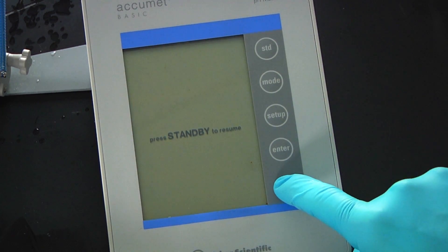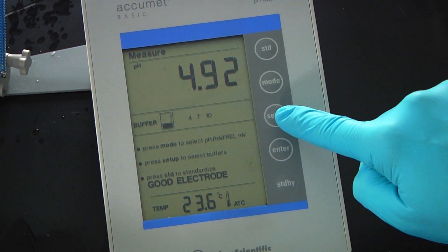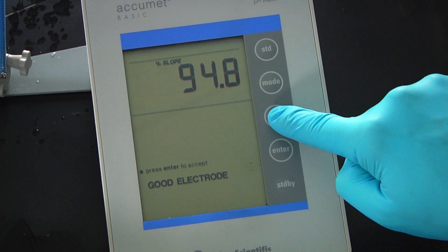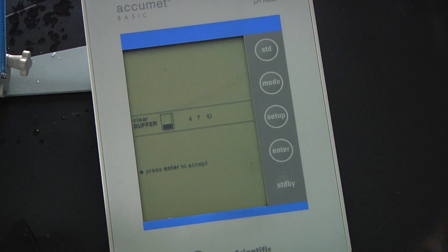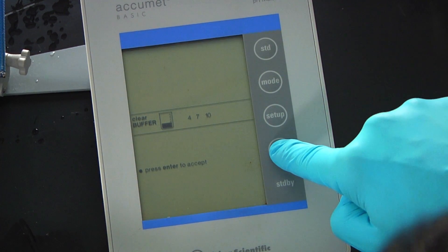First, we need to purge the pH meter to erase the previous calibration. Press the setup key twice. Press enter to clear the previous calibration.